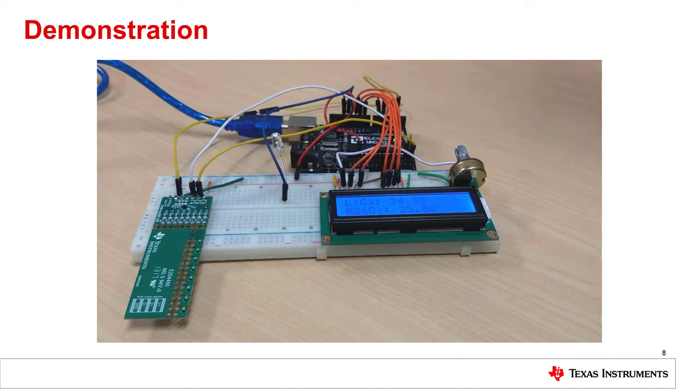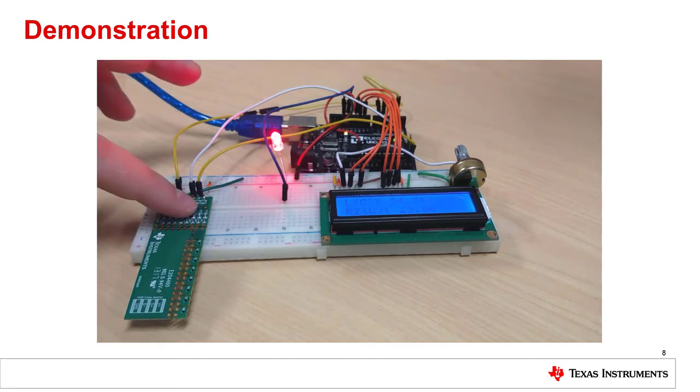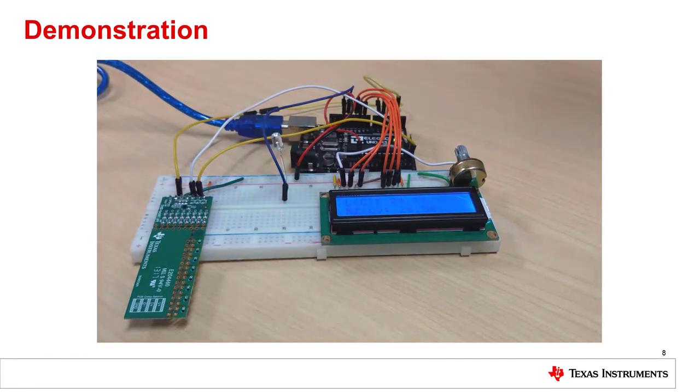The local therm limit register is set in our sketch to be 26C, so by placing my finger on the TMP468, I can trigger an alert from the therm pin as shown by the toggling of the red LED. Be careful doing this if you're not properly grounded, as ESD can damage the device.